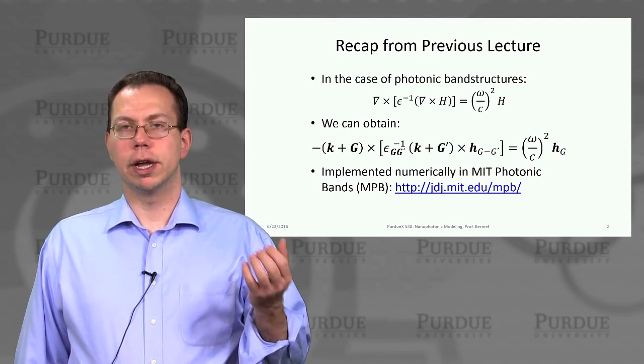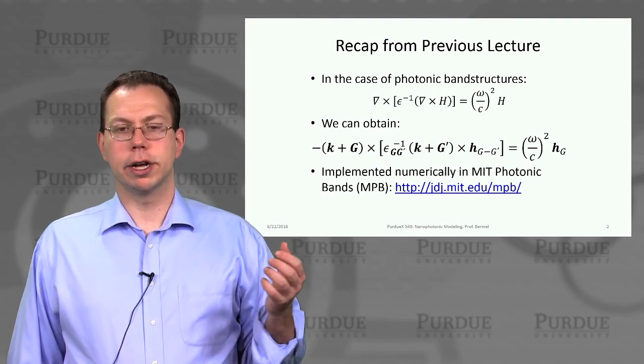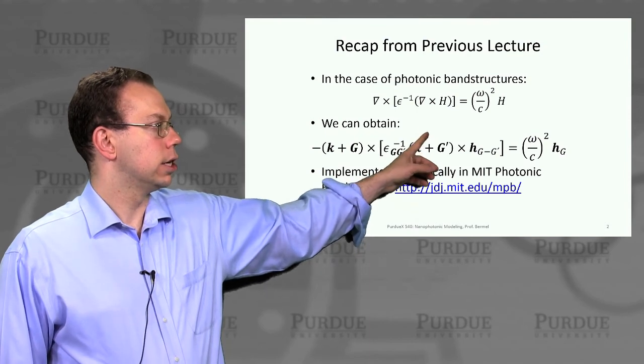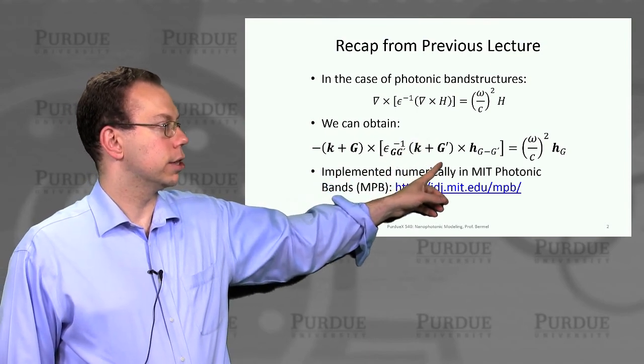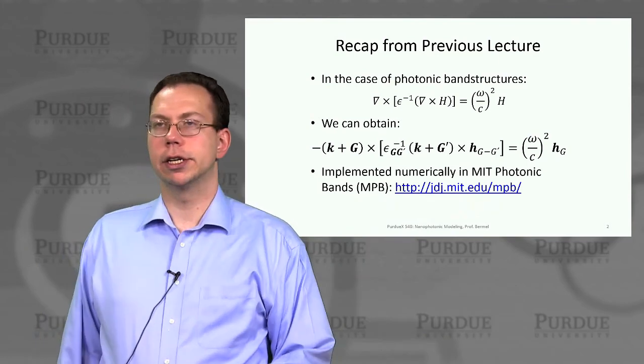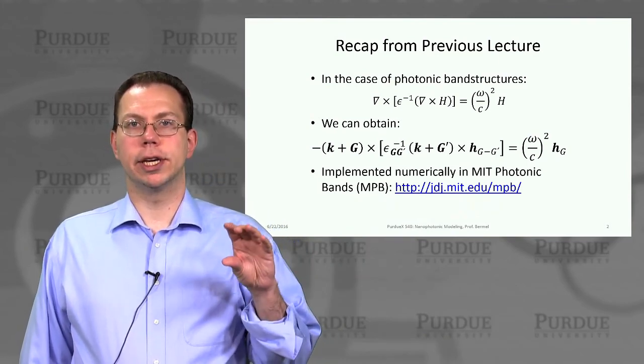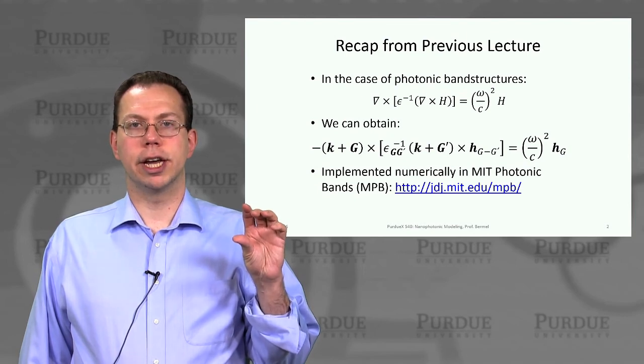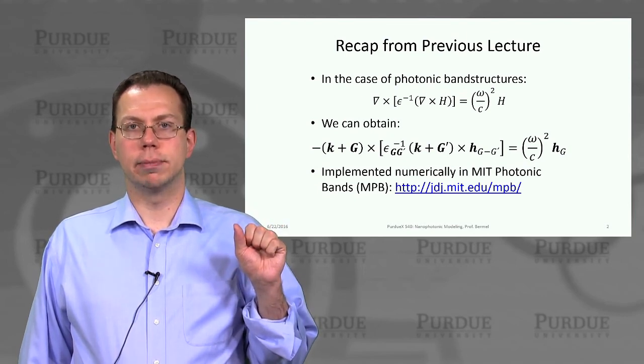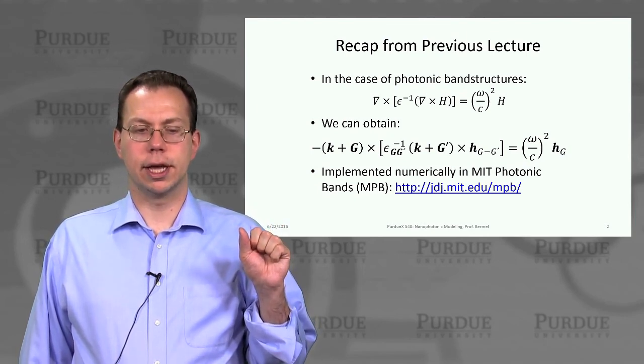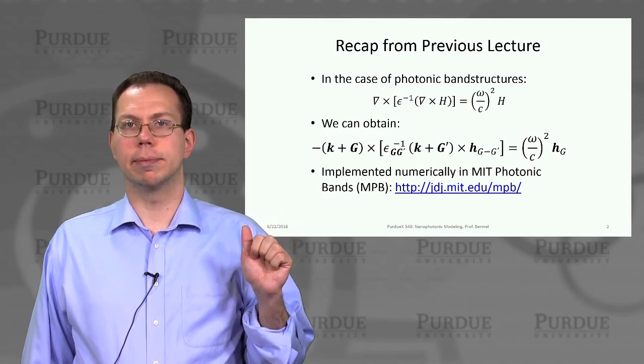We were able to transform the operator in the upper left into basically a large matrix, which multiplies a column vector hg, g, g minus g prime, which basically describes the Fourier components of the magnetic field, or the h field. And this is implemented numerically in MIT photonic bands.